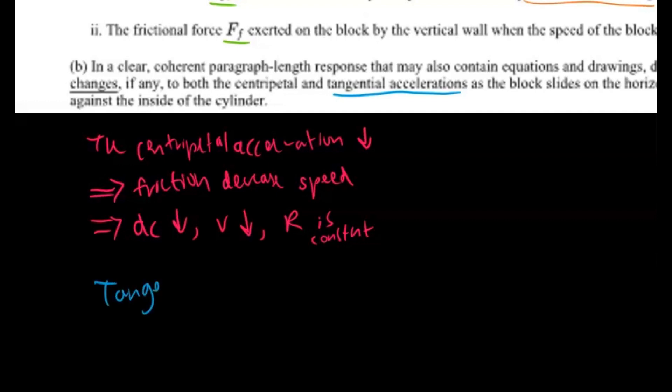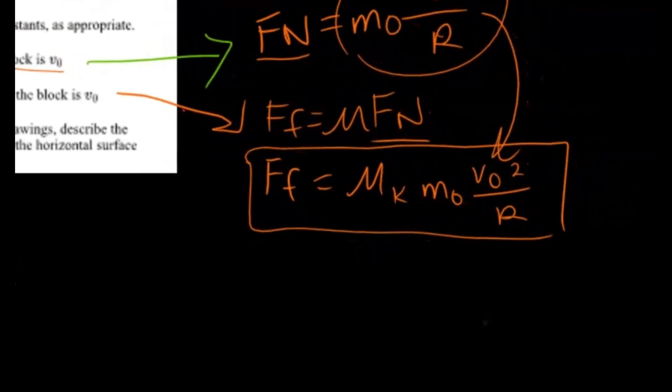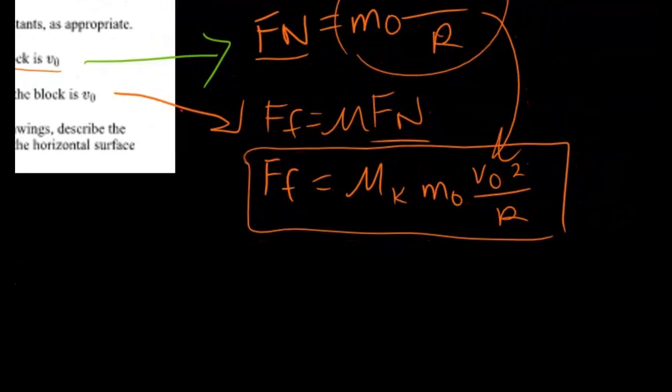So the tangential acceleration, in our case, it is going to be decreasing. Now why? Well, it's going to be decreasing because we want to look at our equation here. So we know that the velocity due to friction is going to be decreasing, right? Because we already talked about how centripetal acceleration is going to be decreasing. So if this decreases, that's going to be leading to a decrease in the frictional force.